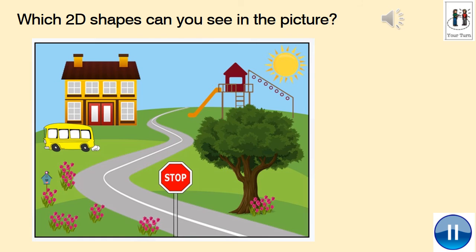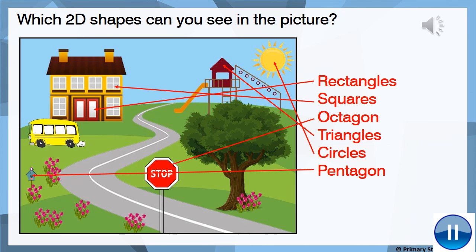Which 2D shapes can you see in the picture? Can you see any triangles, any squares, any rectangles, any circles, any hexagons, pentagons, octagons? Write down all the shapes that you can see, just the 2D shapes. How did you get on? Did you find these?